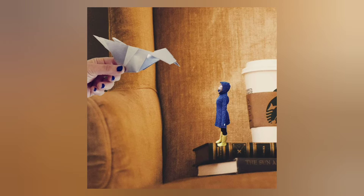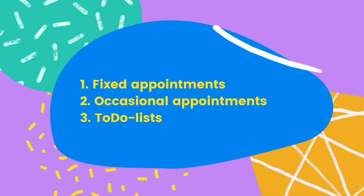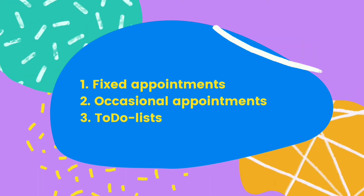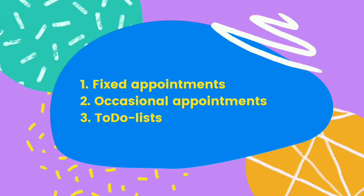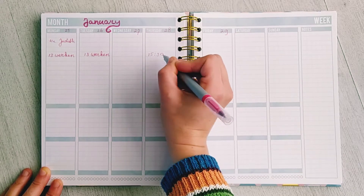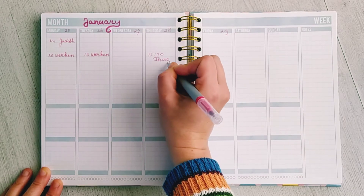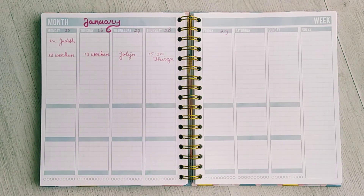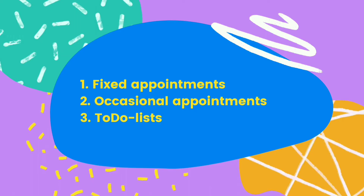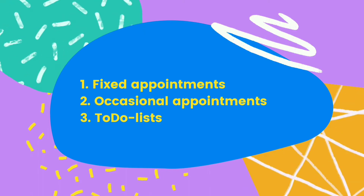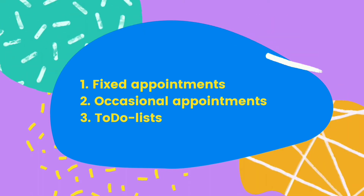Step 2 is adding your occasional appointments. For some of those I do not know the time yet, but I do know that energy-wise one appointment a day is enough for me. So I can just write down the name and add the time later. The rest of the day will be for my to-do list.